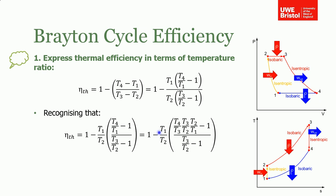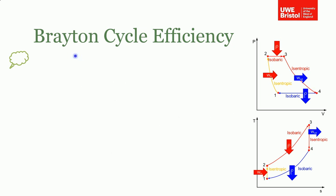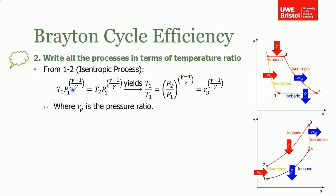Now we derive expressions for each process. From one to two — the isentropic compression — we use the polytropic relationship between T, P, and γ, and rearranging gives T2/T1 as a function of (P2/P1)^((γ-1)/γ). We call P2/P1 the pressure ratio rp. For two to three — the isobaric heat addition — from the ideal gas law pV/T equals constant; since P2 equals P3, these cancel and we get T3/T2 equals V3/V2, which we call the volume ratio rv.